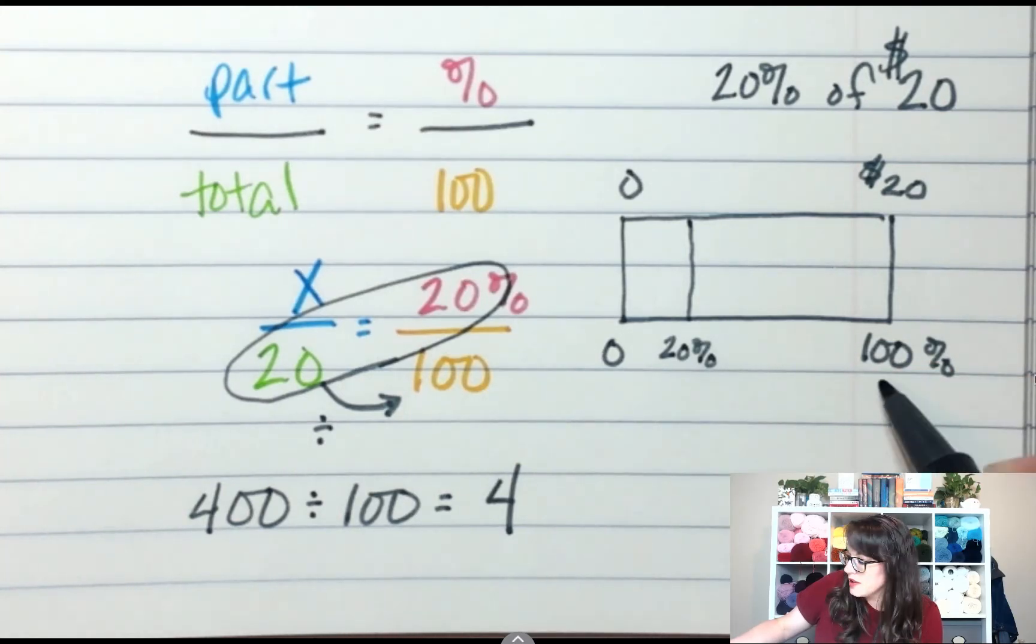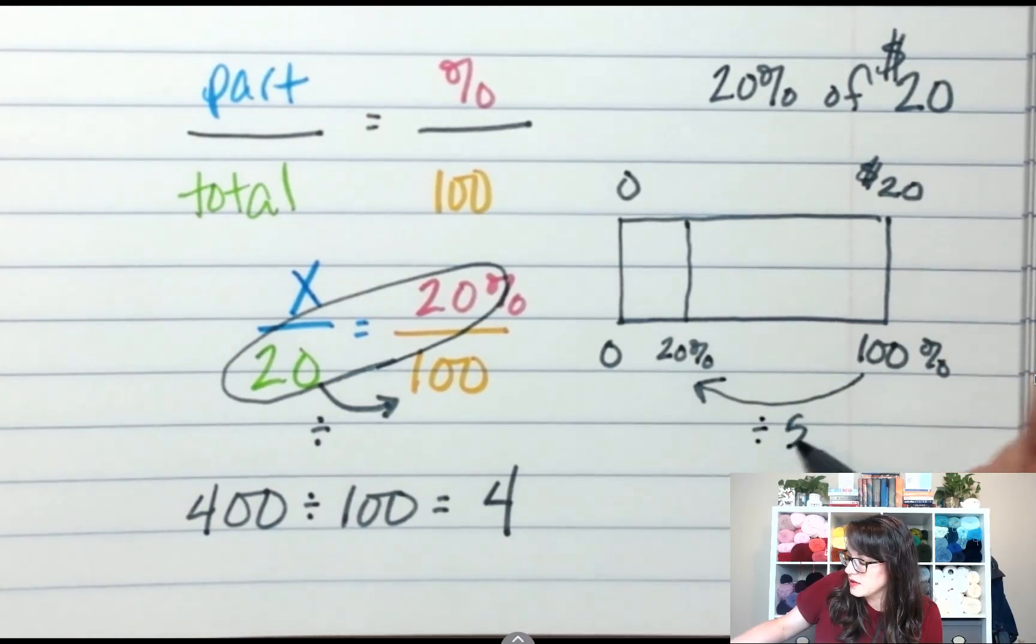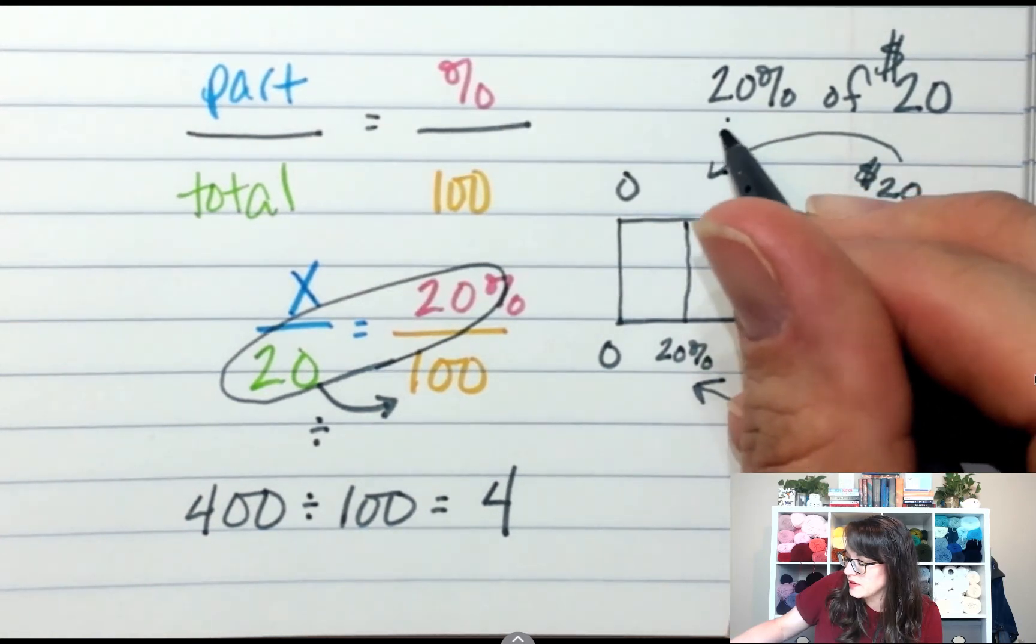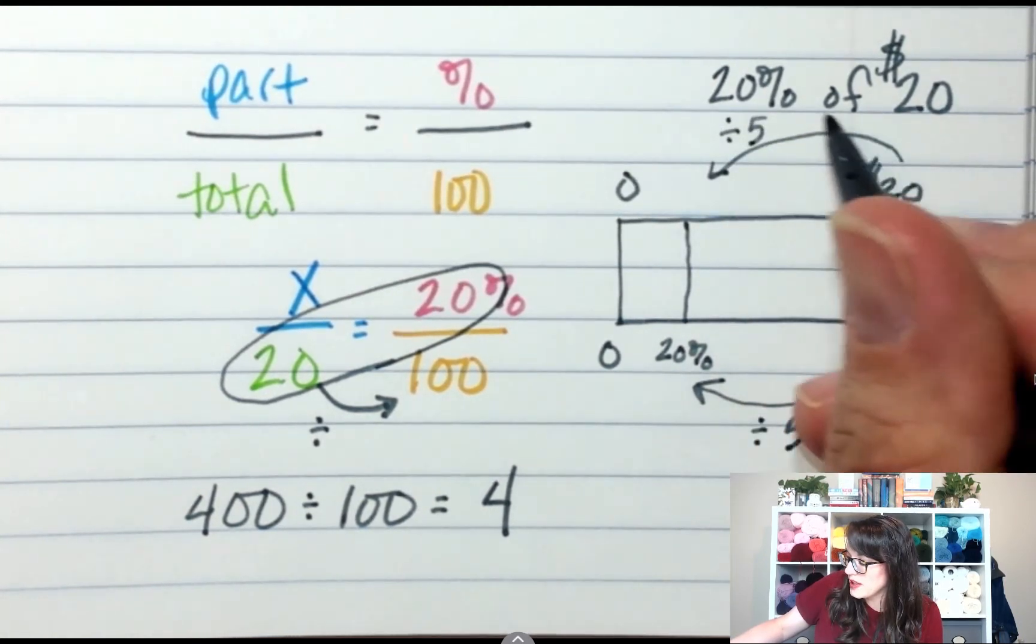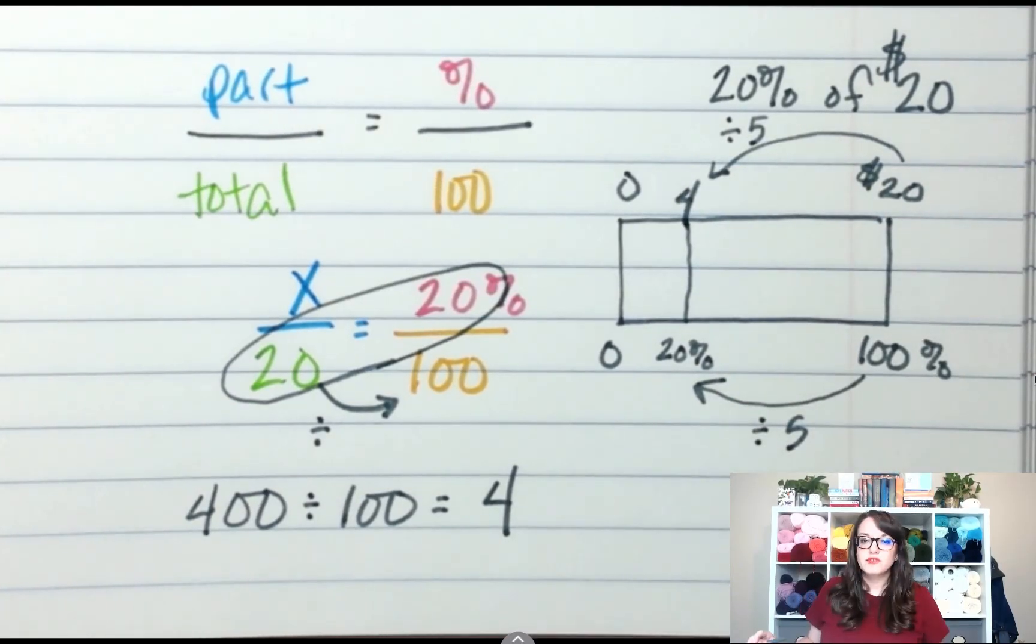You could divide by 5. So 100 divided by 5. If I cut this by 5, I have to cut this by 5. What's 20 divided by 5? 4. So same idea, just a way to visualize what's happening. There's other ways you could have done that too, but that one was the fastest.